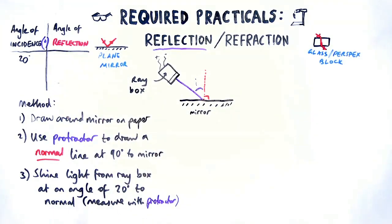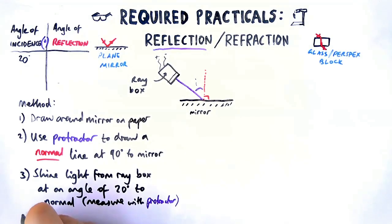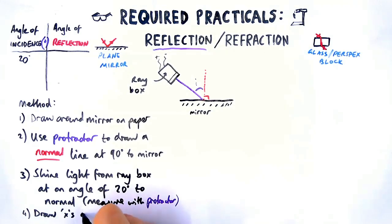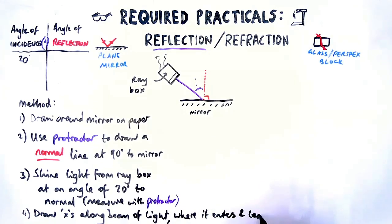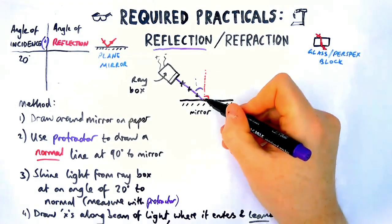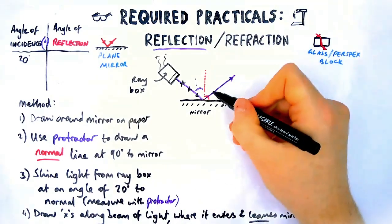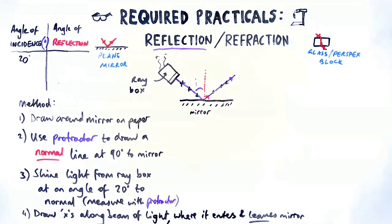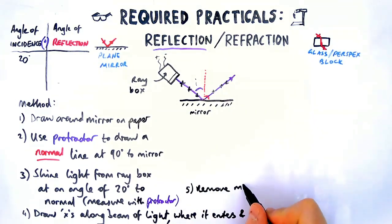Next, what we're going to do is essentially draw X's where the ray of light goes. So along the beam of light, and that's where it enters and also where it leaves the mirror. So the reason for that is because you've got all the equipment out. It's quite hard to draw a straight line in when you've got the box and the mirror lined up. If you've ever done this practical, you'll know that. So draw X's and then you take away the equipment and you essentially join the lines up. So you remove the mirror and you join up or trace the rays through the X's.